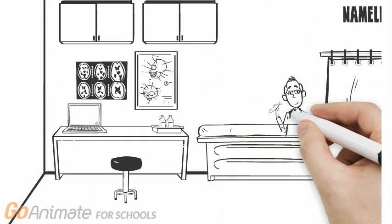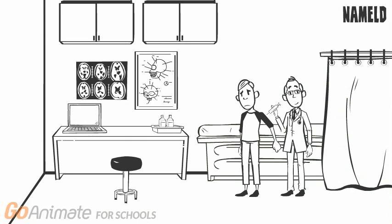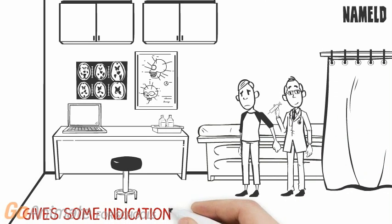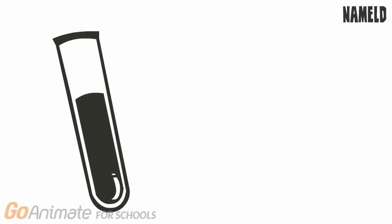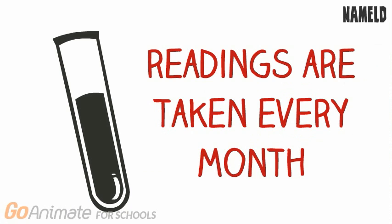So in order to determine the correct NAMELD number, patients are given a blood test which determine various factors, all of which give some indication to the severity of the disease, allowing doctors to assign each patient a number. These readings are taken every month in order to accurately depict the situation of each patient.